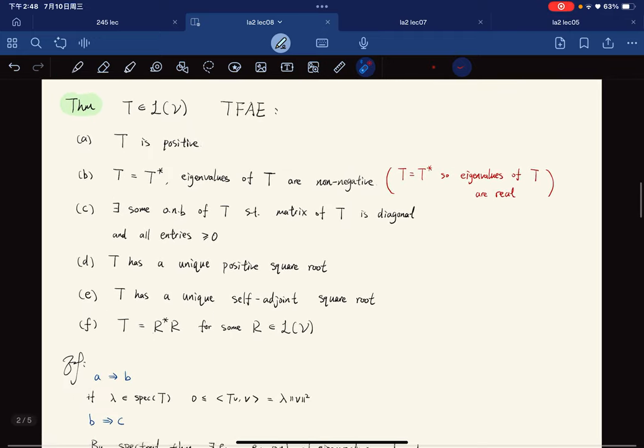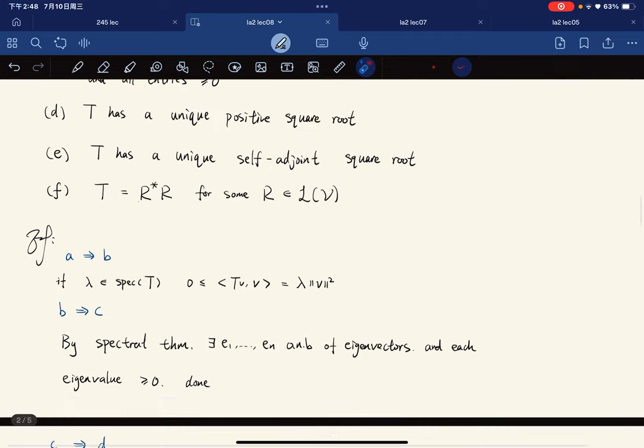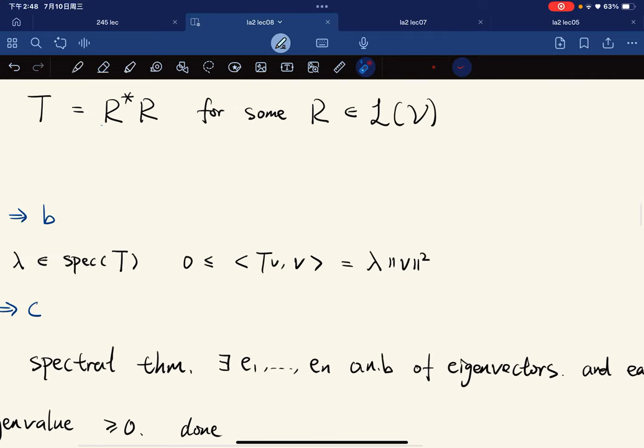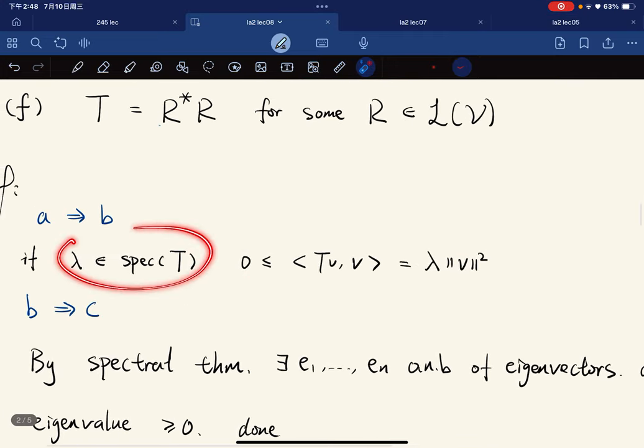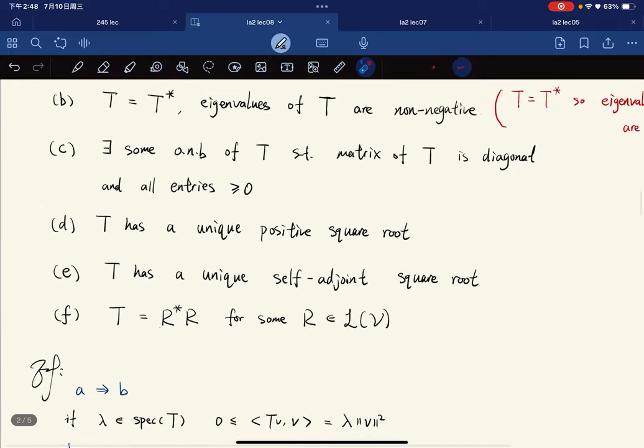So A implies B. This is already done, and to show that the eigenvalues are non-negative, if lambda is the eigenvalue, <Tv,v> equals λ<v,v>, which is non-negative.